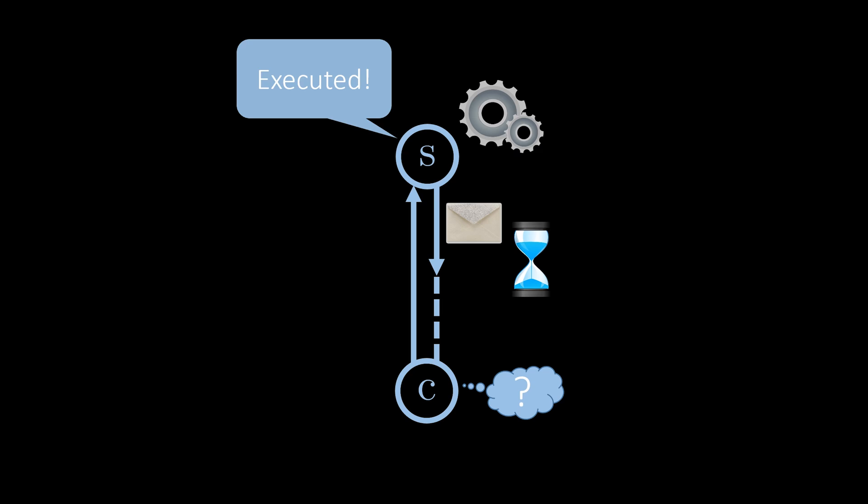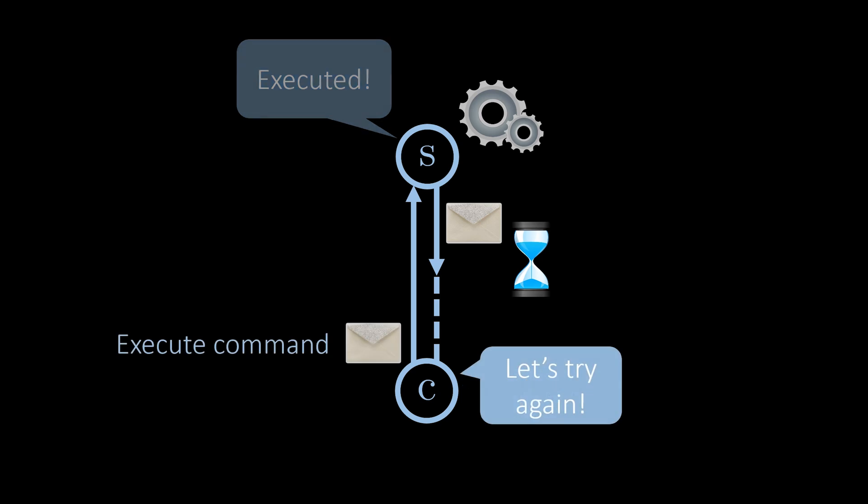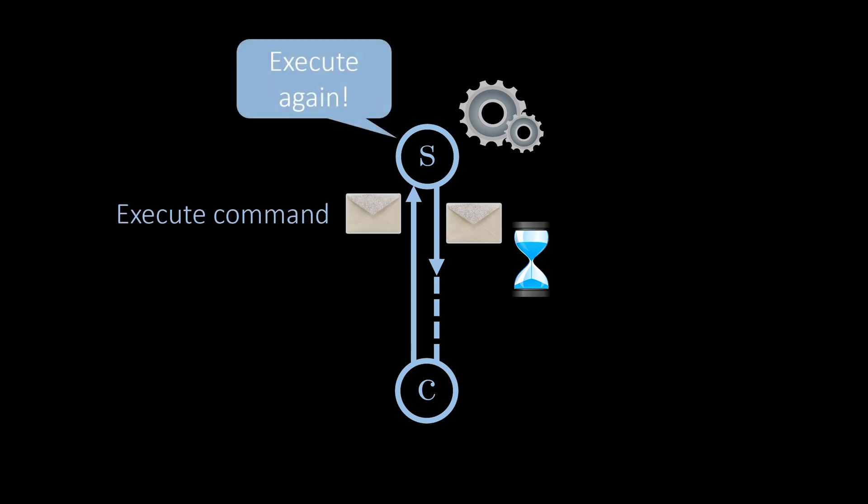How could the client handle this situation? If there is a chance that the message got lost, it could simply decide to issue the same command again. However, if the server did execute it, then there is now the risk of executing the same command twice, which was not the client's intention. How can this problem be fixed?